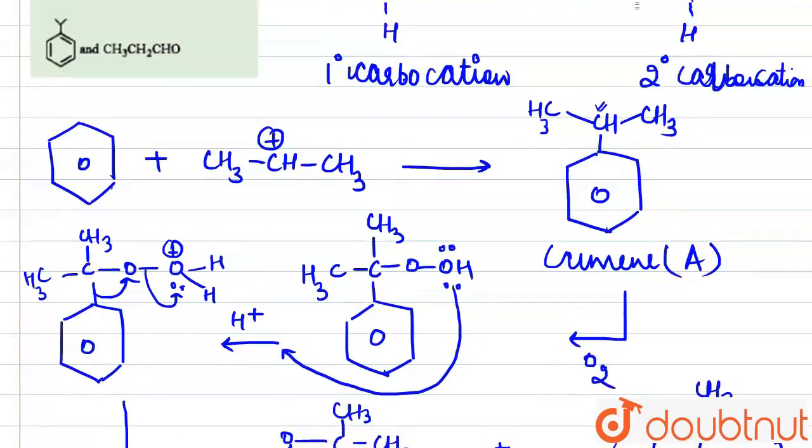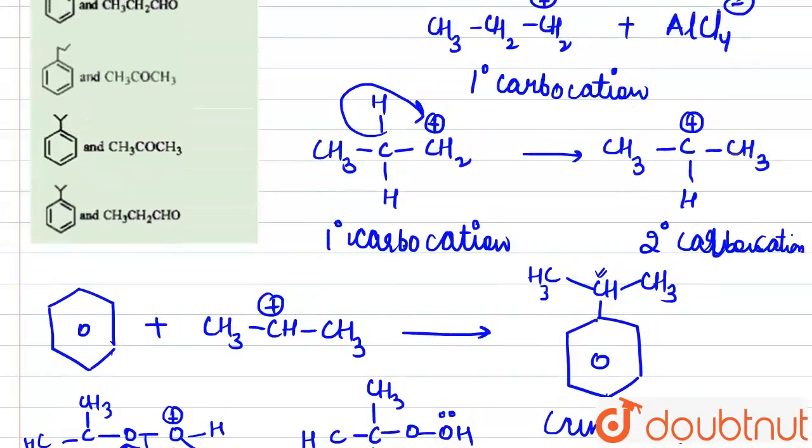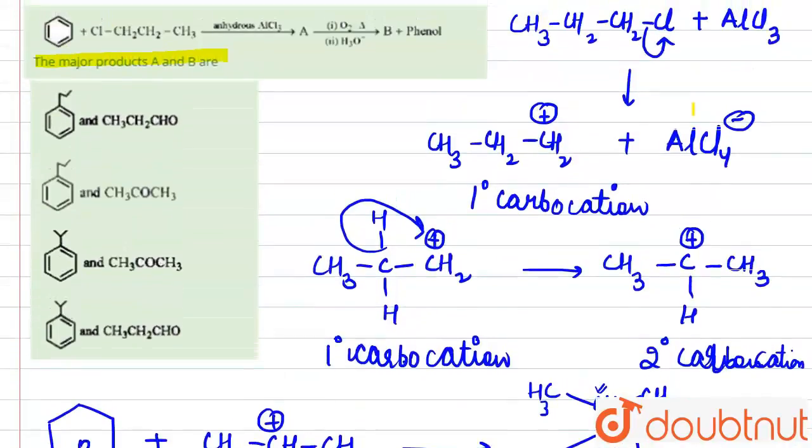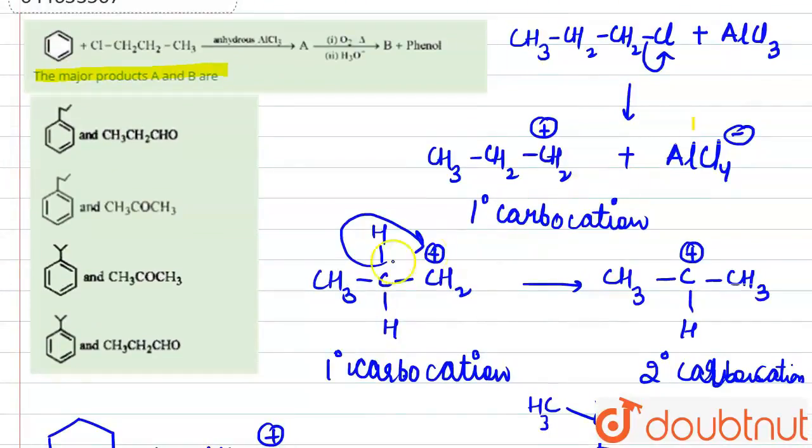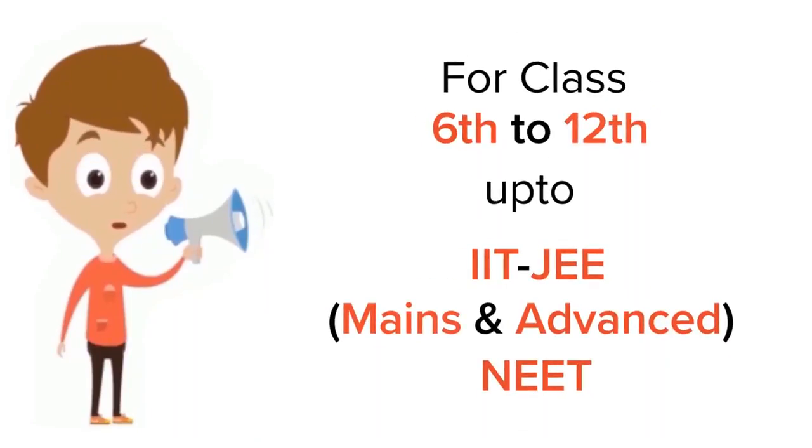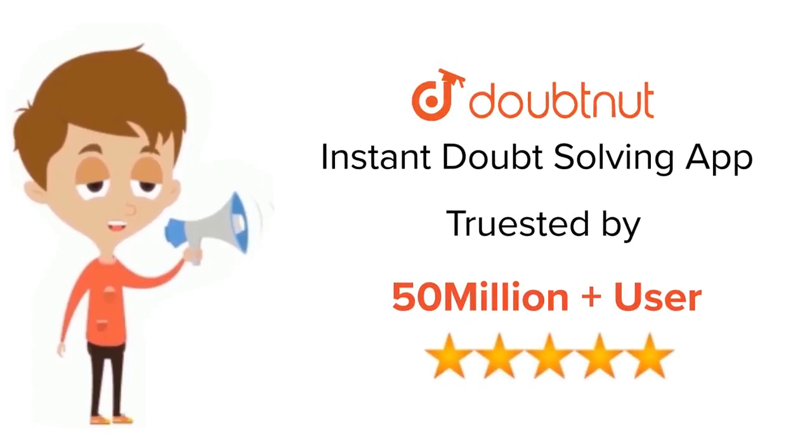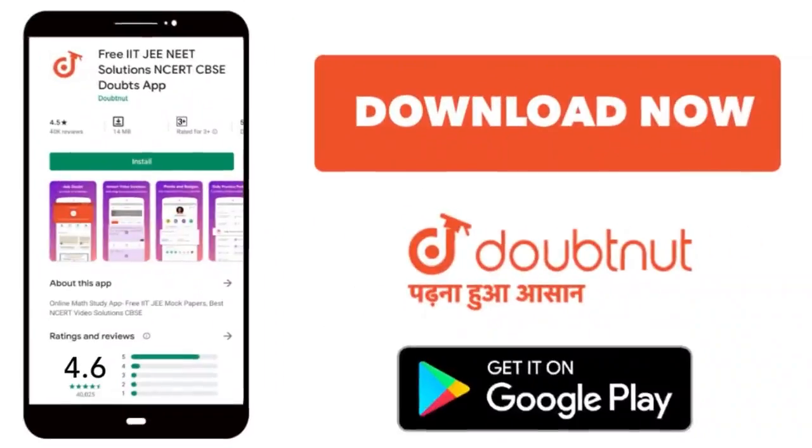So let us check the correct option. So the correct option is option number 3. This will be the required answer. Thank you. For class 6-12 IIT JEE and NEET level, trusted by more than 5 crore students, download Doubtnet app today.